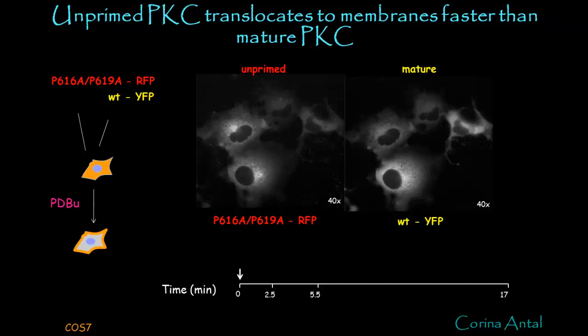We found that protein kinase C that has not been matured by phosphorylation translocates to membranes much faster than the matured protein kinase C. In this experiment, we've taken a protein kinase C that cannot be primed by phosphorylation — this would be the red construct — and a wild-type protein kinase C, transfected them into the same cell, and monitored where they go upon activation by phorbol esters and how quickly they go there. The unprimed protein kinase C in RFP after five and a half minutes has translocated to the membrane, whereas the wild-type enzyme still remains primarily in the cytosol.